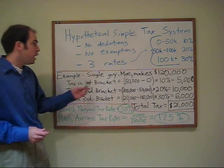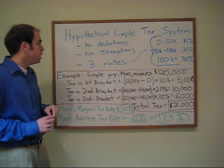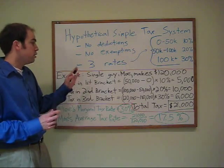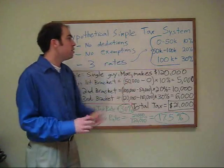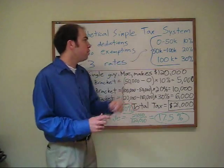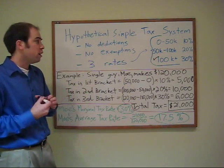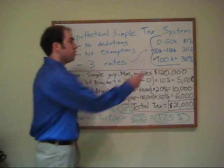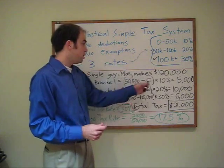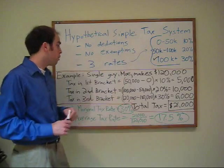In this example we have a single guy named Moe who makes $120,000. We assumed no exemptions or deductions — this is a very simple tax system compared to the one we obviously have. Every dollar of his income is taxed in one of these three brackets. The tax in the first bracket would be all his income earned from $0 to $50,000. Because he makes $120,000, he's in the top marginal tax bracket. However, he's taxed on his first $50,000 in that bracket, so the first $50,000 would be taxed at 10%, giving $5,000 in that first bracket.